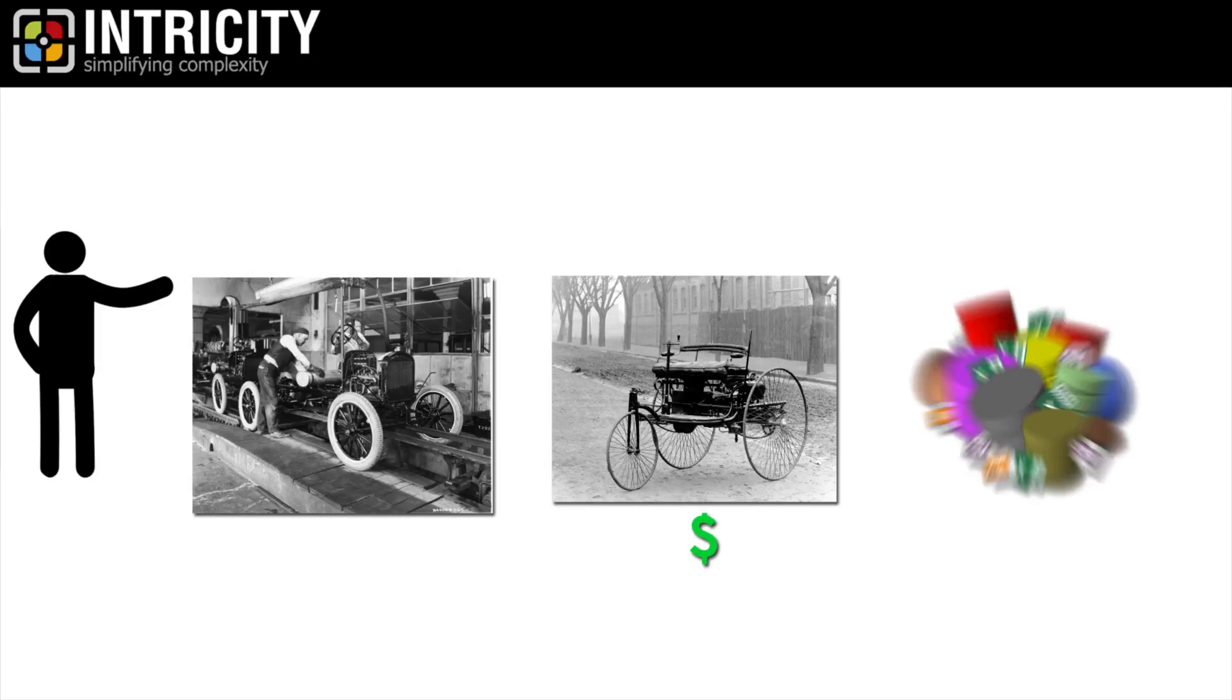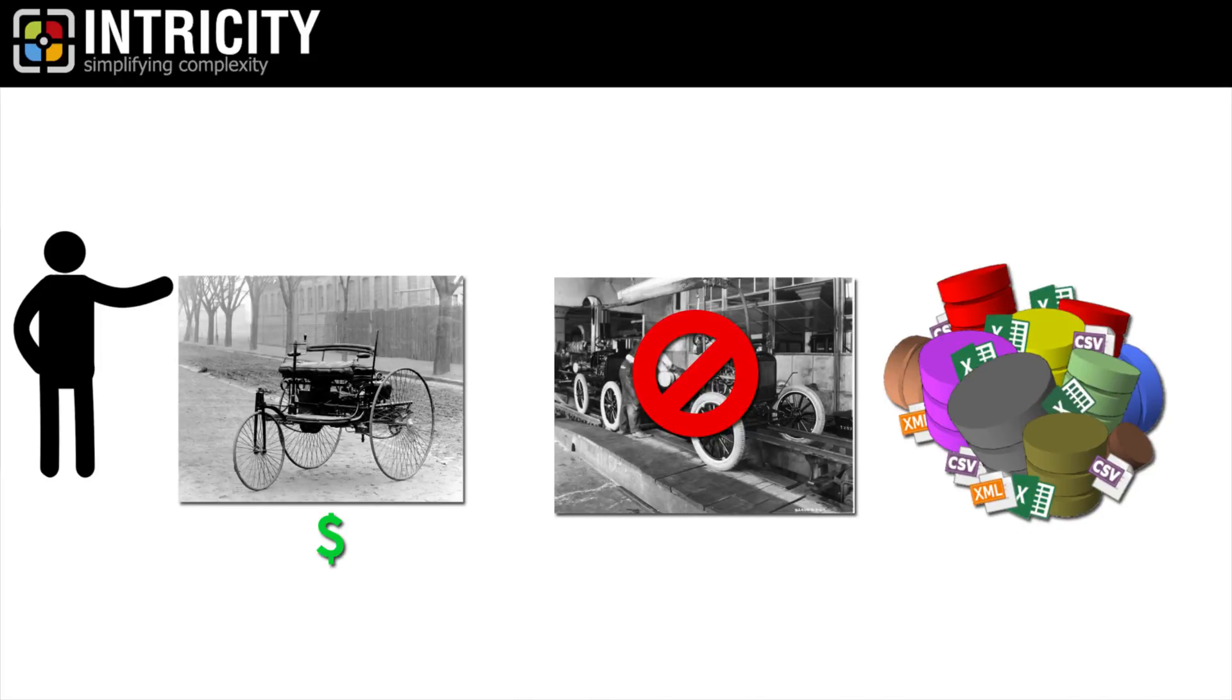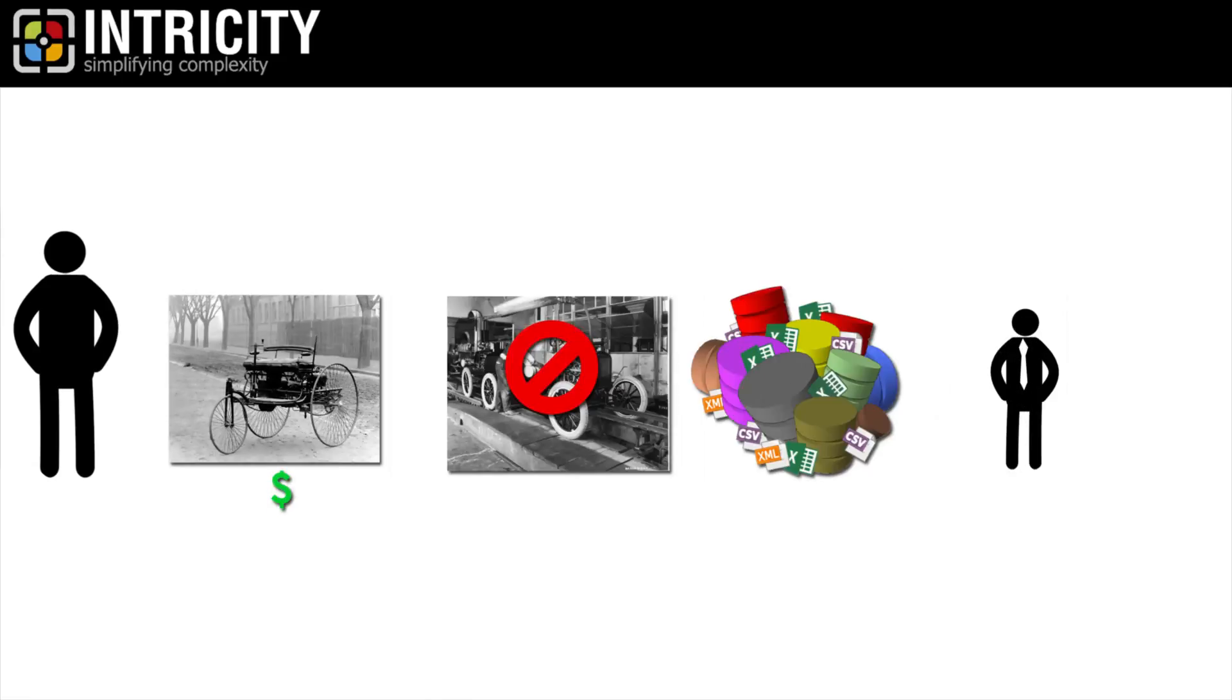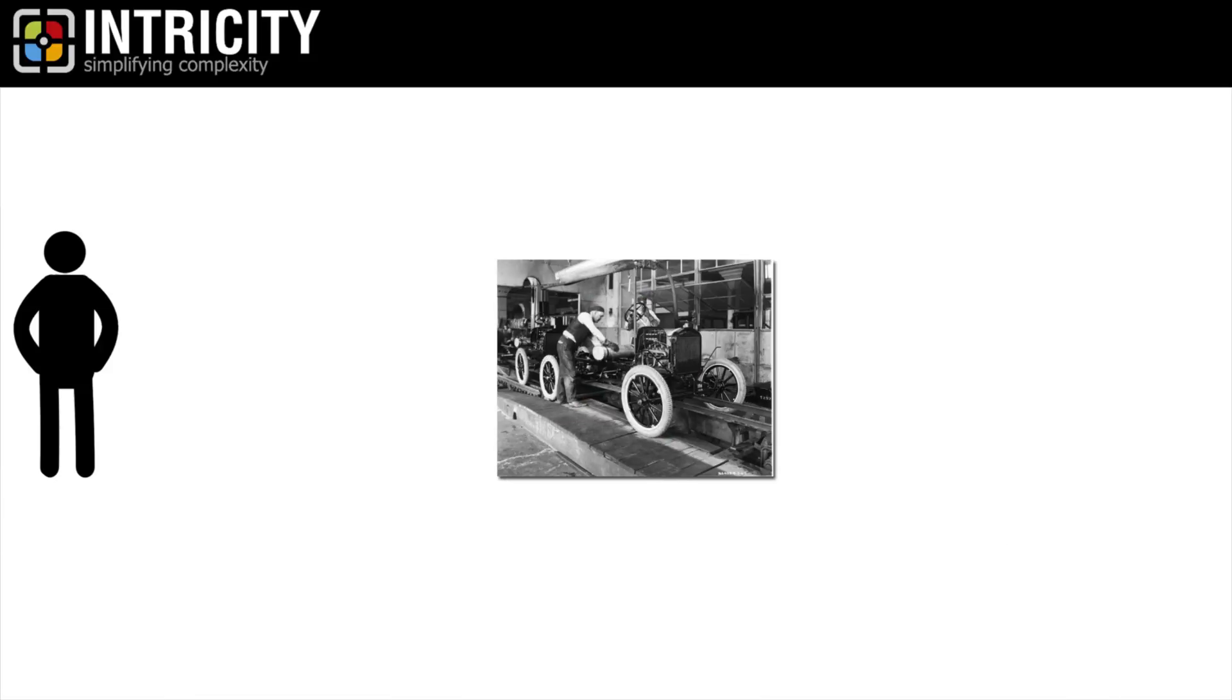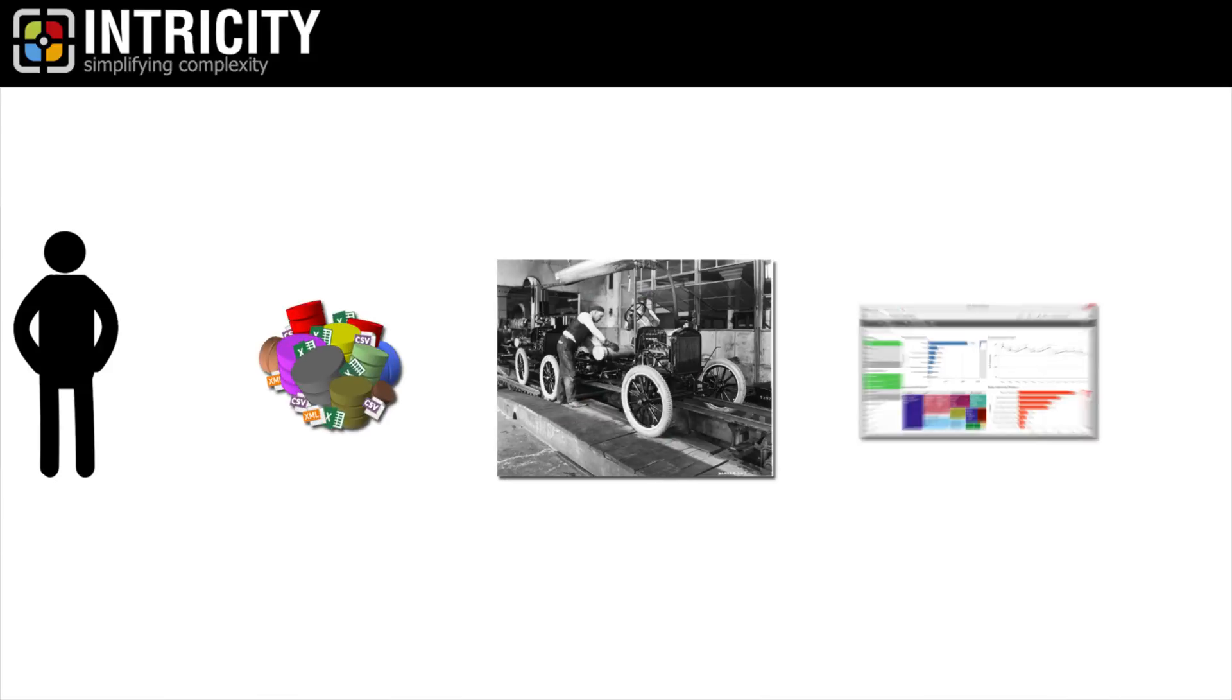The same is true for your data. If you don't have a process in place for orchestrating newly onboarded data, then making accurate decisions will be expensive and will only feed a few individuals. To scale this, your organization will need to set up an automated assembly line which will turn data into actionable information.